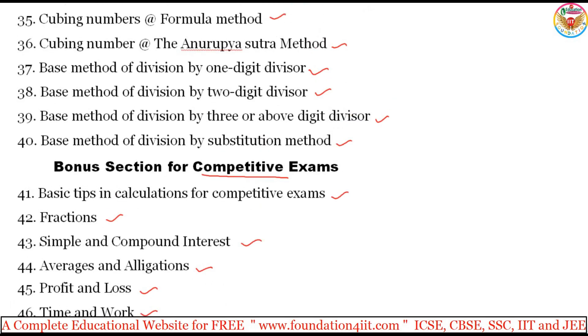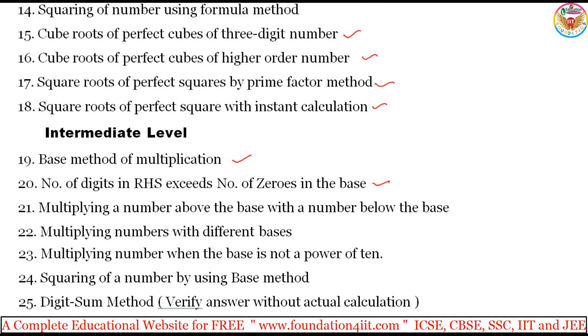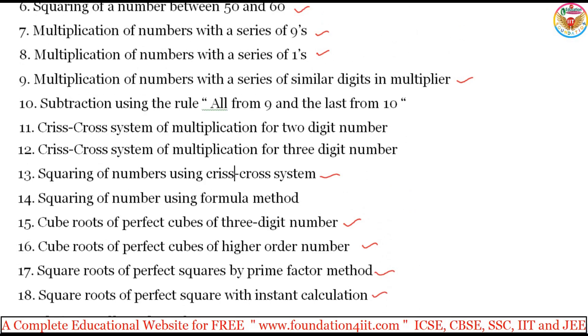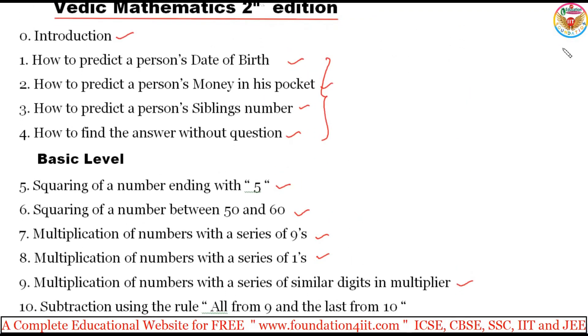So these are the total 50 topics we will see one by one. First, let us have some interest in the concept of this maths — we will see the first four topics, then we will start the basic level. These three levels you need to follow in order: basic level, then immediately intermediate level, then followed by advanced level. So whoever wants to learn this, you need to come in order. The previous series link is also available in the description below — you can follow each and every concept one by one. To understand the concept clearly, you need to go through that.